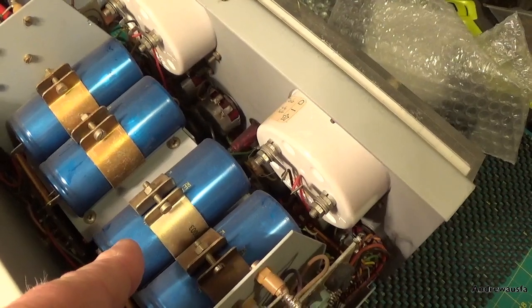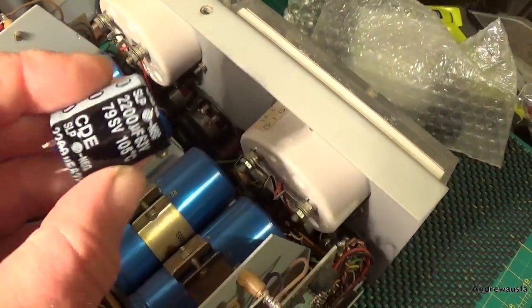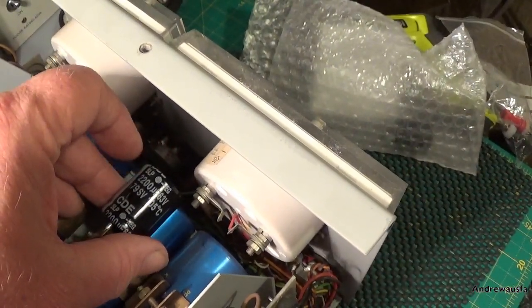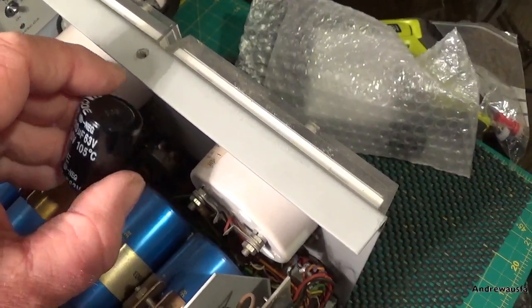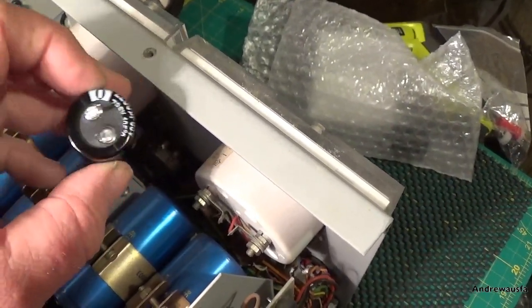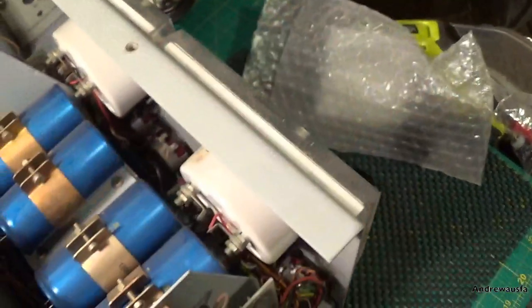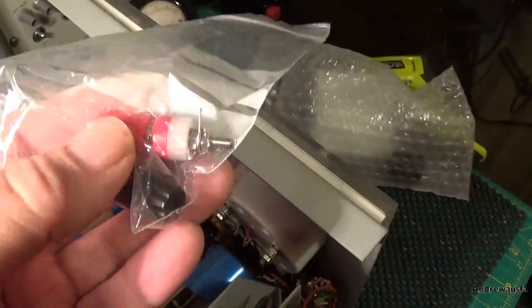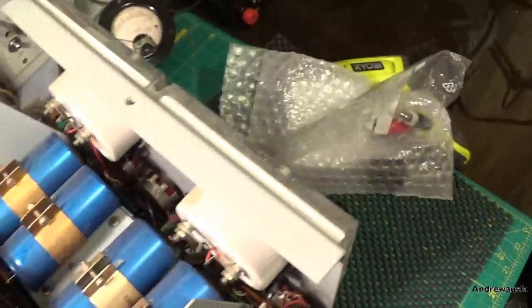So these are 2200 microfarad at 63 volts. These are 2200 microfarad at 63 volts. Massive size difference. These are about 5 pounds each I think, quite expensive. I've also got new terminals for it, though unfortunately these are slightly bigger than the ones fitted to the unit, but better than nothing.